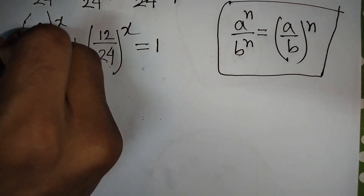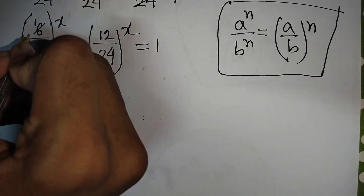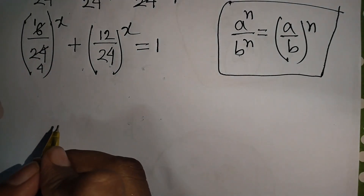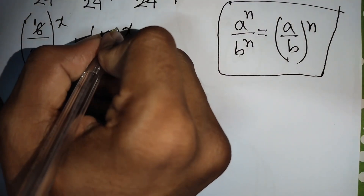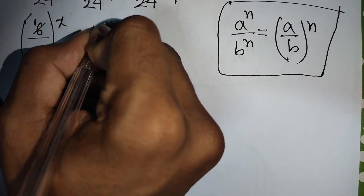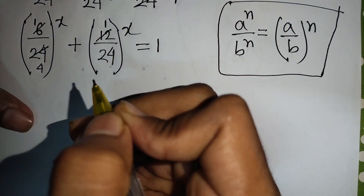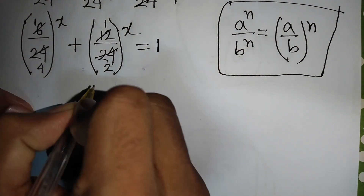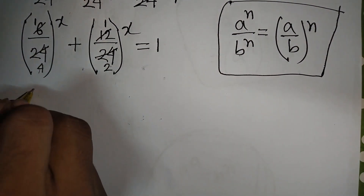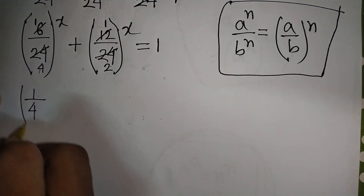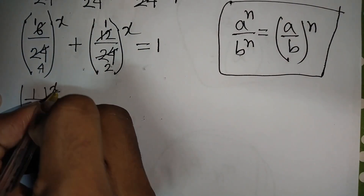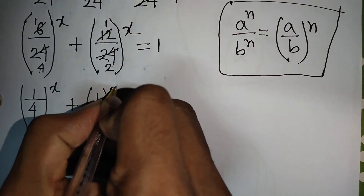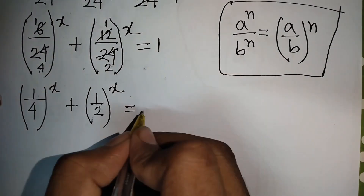6 divided by 24 means 1/4, and 12 divided by 24 means 1/2. So we now have (1/4)^x + (1/2)^x = 1.